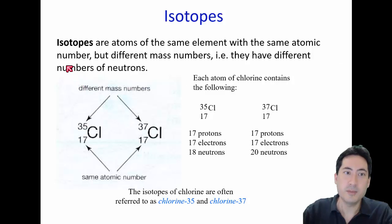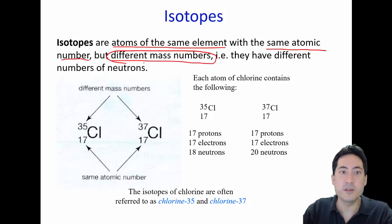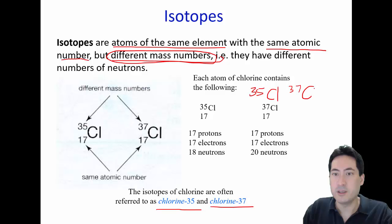Moving to isotopes now. Please have this definition memorized. There's an element, the atoms are the same element. Therefore, they must have the same atomic number, the same number of protons. But what happens is there is a different number of neutrons inside the nucleus. So the way we write that is in written form, we write chlorine-35, chlorine-37. But in symbolic form, we'll just write 35Cl or 37Cl. This usually doesn't need to be written because if it's not 17, then it's not chlorine. So here you can see there are 18 neutrons here. That's why this one only adds up to 35. But there's two more neutrons here, so this one adds up to 37.